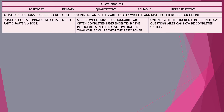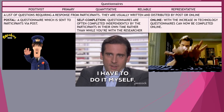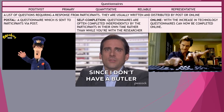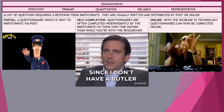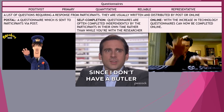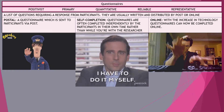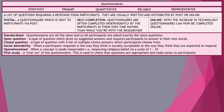Questionnaires can be distributed in written form, by post, or online. A postal questionnaire is sent via the post; a self-completion questionnaire is one the respondent completes themselves. Most questionnaires tend to be self-completion, even if sent via post or online. Online questionnaires can be distributed via online technology.